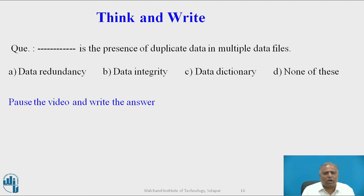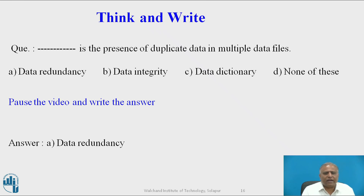Now a question for all students — please give the answer. Blank is the presence of duplicate data in multiple data files. Option A: data redundancy. Option B: data integrated. Option C: data dictionary. Option D: none of these. Pause the video and write the answer. The correct answer is data redundancy — data redundancy is the presence of duplicate data in multiple data files.